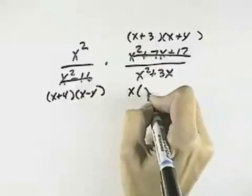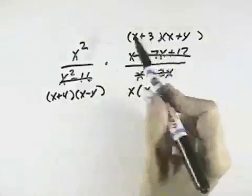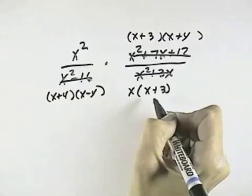Here I have a greatest common factor of x, so I'll pull that out. Now what I can see is if I have any common factors between the numerator and the denominator, I can cancel them before I multiply.